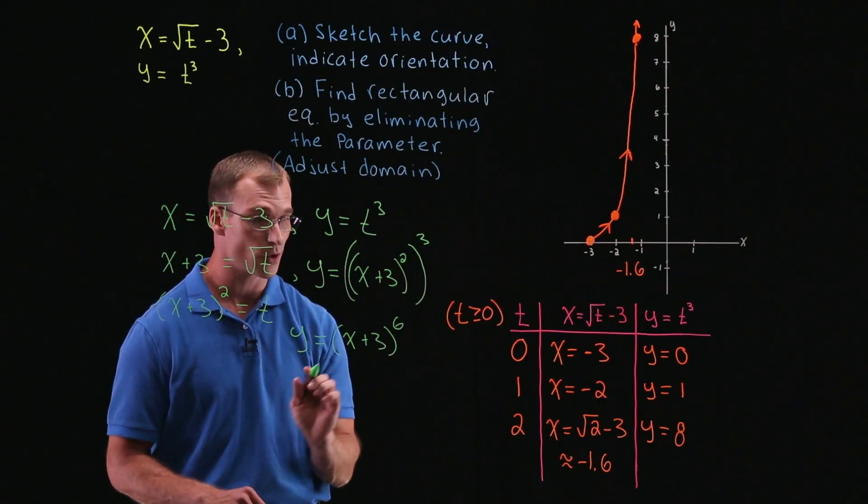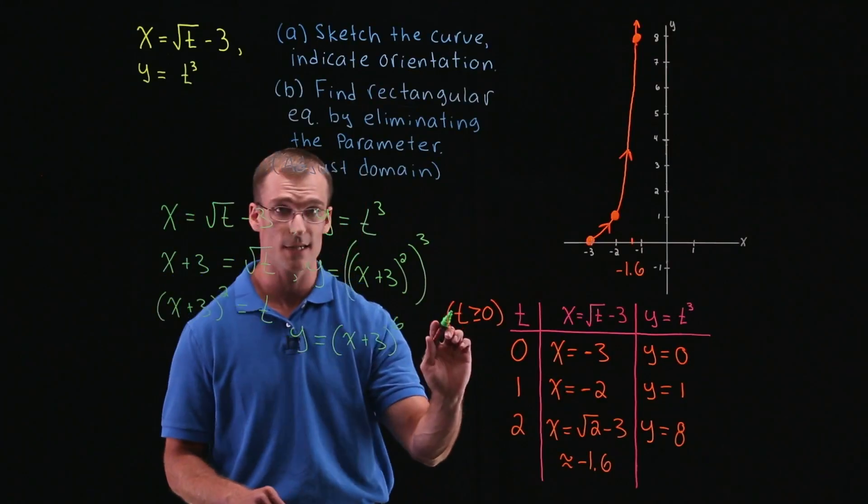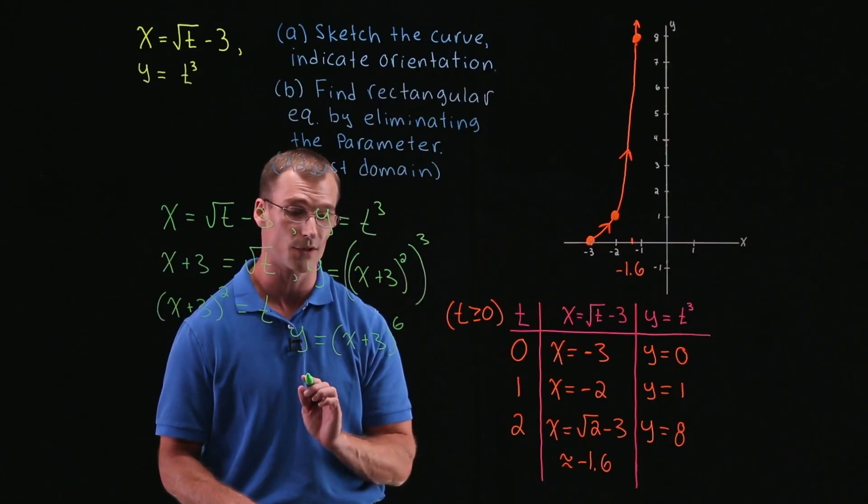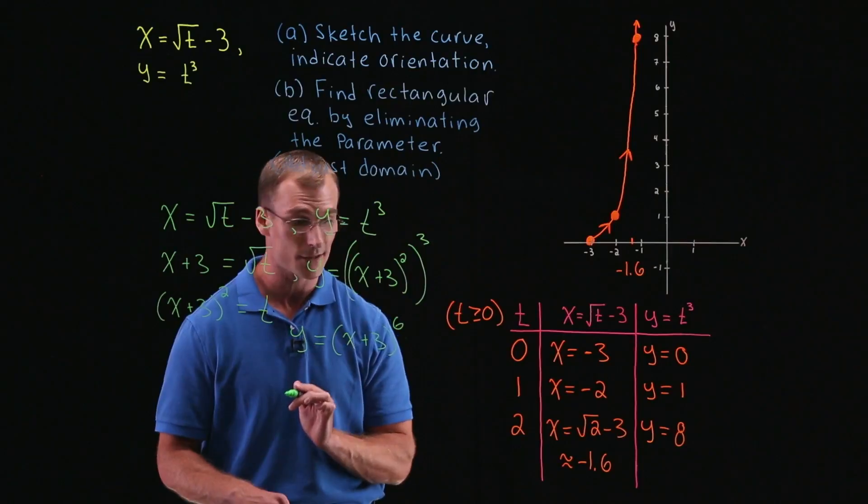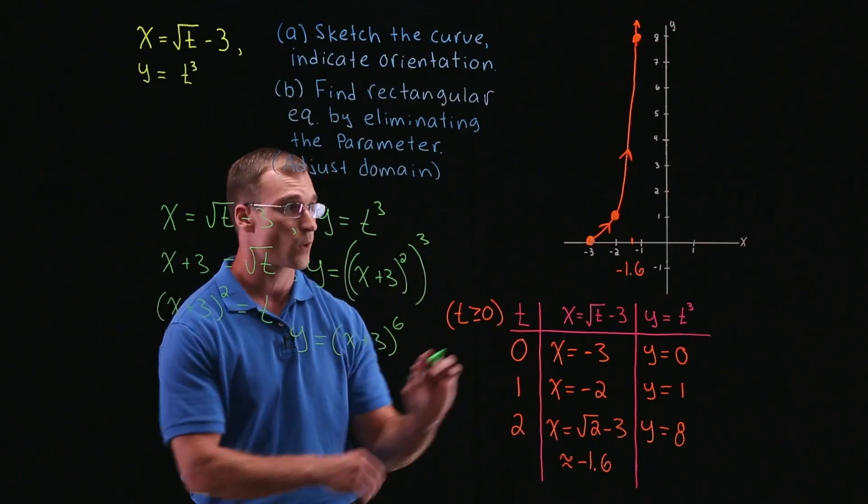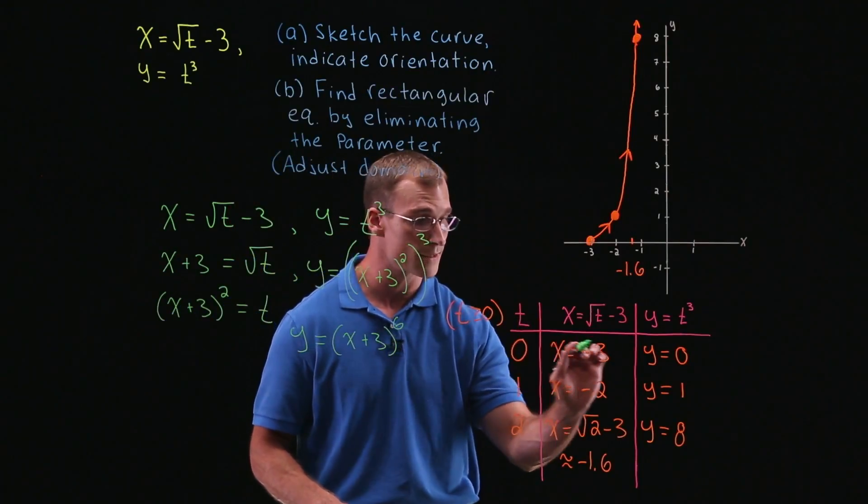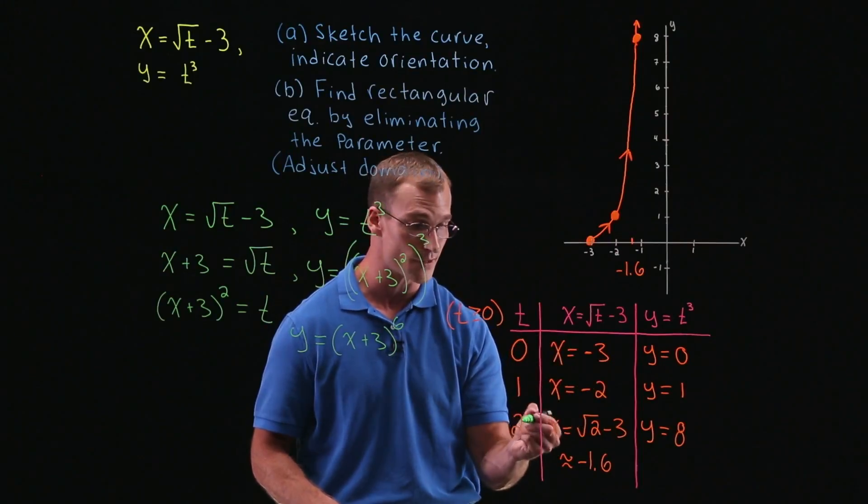Now, it said also want to adjust the domain. So remember, there was a restriction on t. t could only be greater than or equal to 0. So how does that correspond, in this domain, what values of x can we have? Well, we sort of answered the question when we looked at the graph. So when t was 0, we got x equal to negative 3. But as t increased, x increased from there.